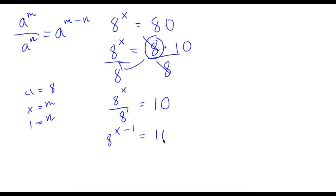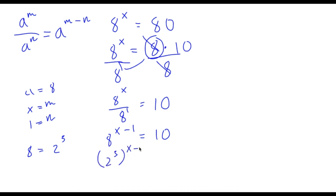Now, 8 is the same thing as 2 to the power of 3. So I'm going to rewrite 8 to the power of x minus 1 as 2 to the power of 3, to the power of x minus 1, which equals 10.